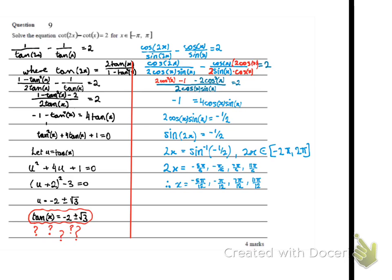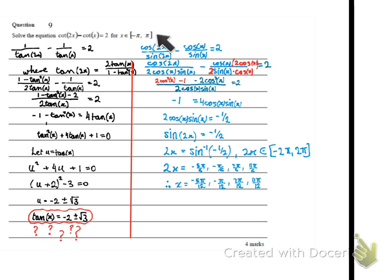This is an important example showing that if you make a choice with a definition or identity and reach a dead end — values for which no exact angle is known — you should start again and try a different formula. In this case, expressing cot as cos divided by sine instead of 1/tan was the key. Well done, keep studying. Thank you.